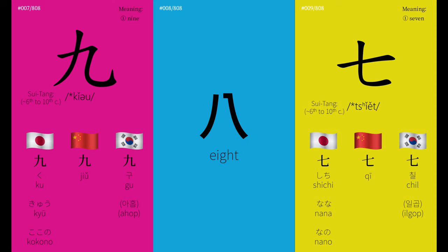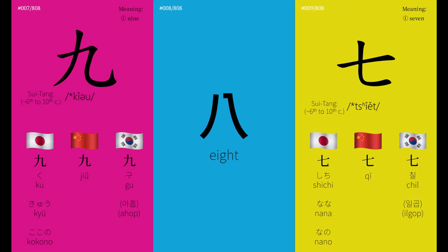The number 8 is the luckiest number in East Asian culture. The word for 8 in Chinese is ba, which sounds like the word for prosper — fa. The shape of the character also suggests growing prosperity since it gradually broadens.